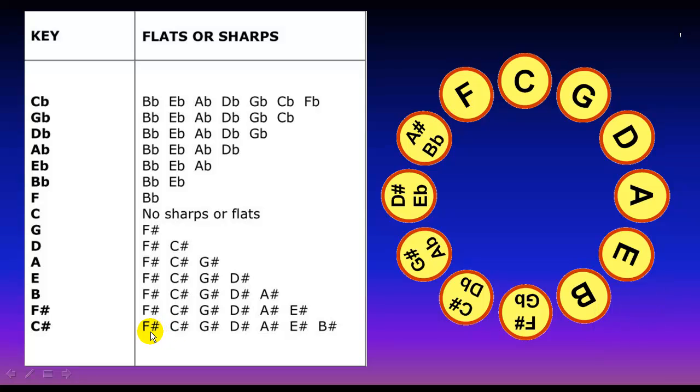And for the sharps: F, C, G, D, A, E, B. You go in this order: F, C, G, D, A, E, B. So there are seven sharps: F sharp, C sharp, G sharp, D sharp, A sharp, E sharp, and B sharp.